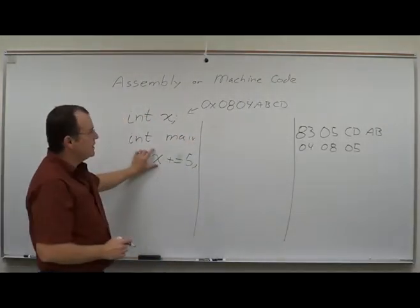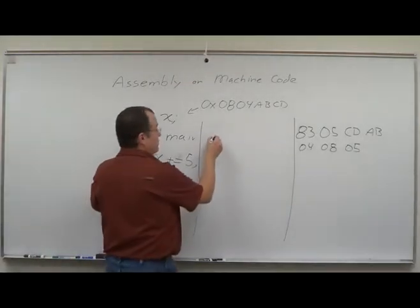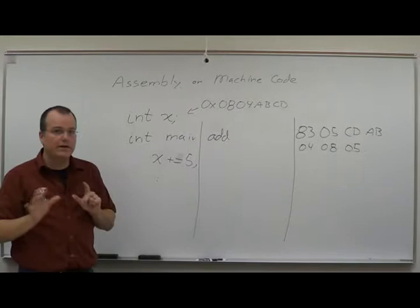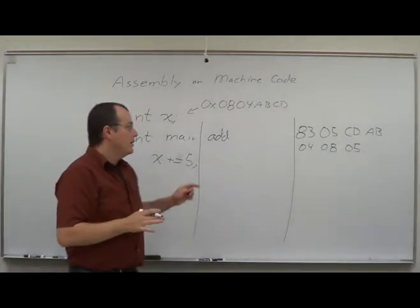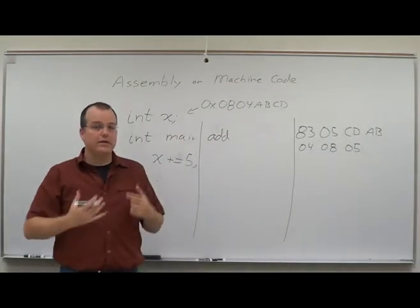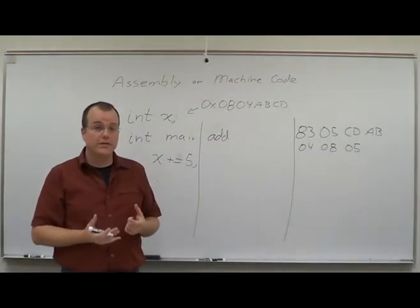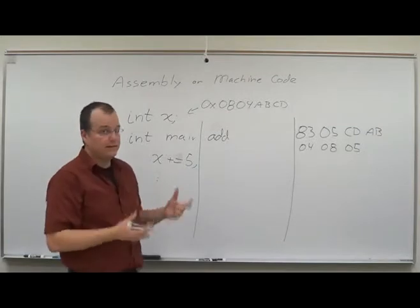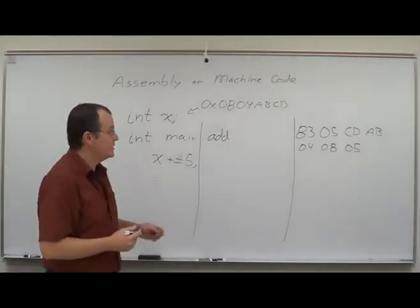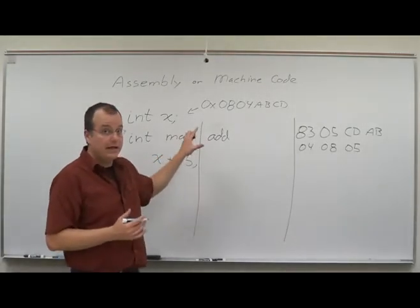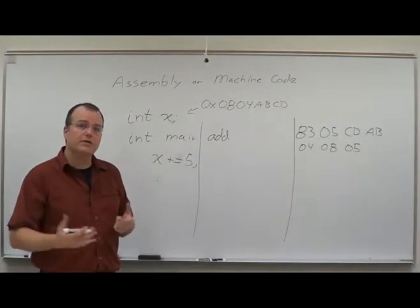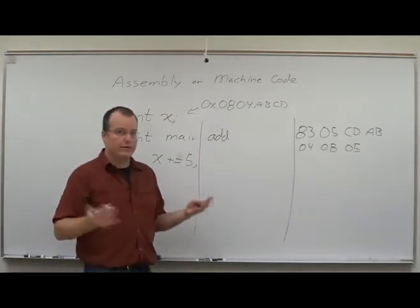So we take this plus equals 5 and actually write down 'add', and this is where we have two schools of thought. There's the Intel assembly that Intel uses and Microsoft uses, and there's the AT&T assembly that Linux and basically the rest of the world uses to describe these operations. I'm going to use the AT&T assembly. If you're a Linux user, this is the assembly that you're going to see from all of the binary tools that you could use.